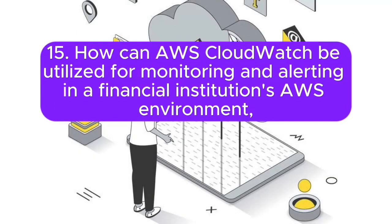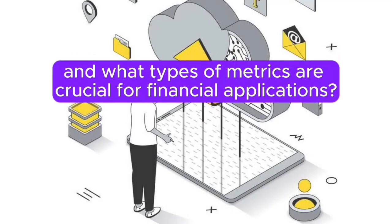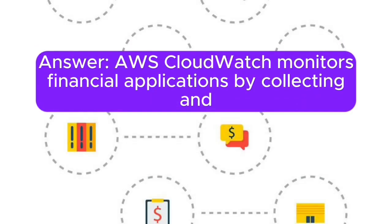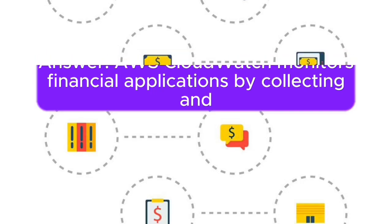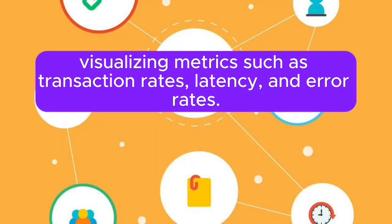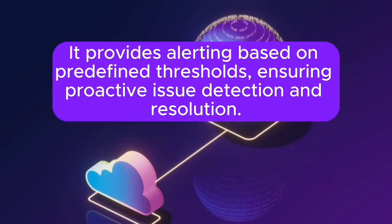Question 15: How can AWS CloudWatch be used for monitoring in a financial institution's AWS environment, and what types of metrics are crucial for financial applications? Answer: AWS CloudWatch monitors financial applications by collecting and visualizing metrics such as transaction rates, latency, and error rates. It provides alerting based on predefined thresholds, ensuring proactive issue detection and resolution.